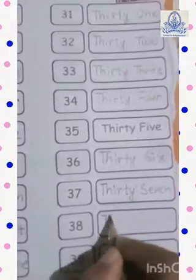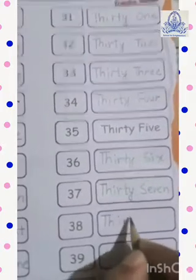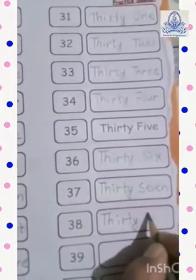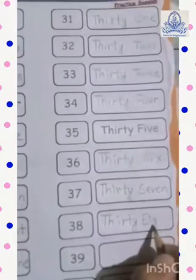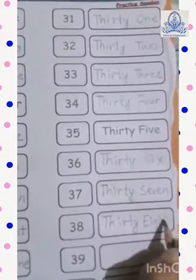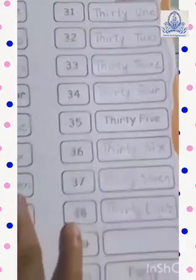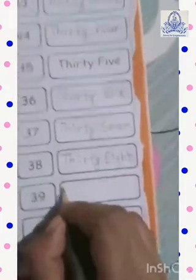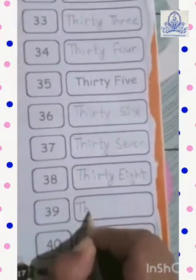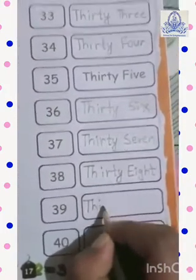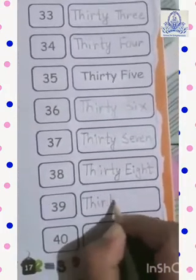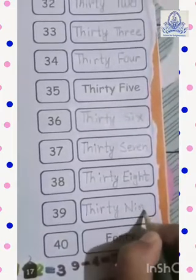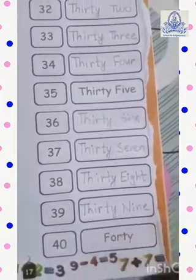Thirty-eight: T-H-I-R-T-Y E-I-G-H-T — 38. Thirty-nine: T-H-I-R-T-Y N-I-N-E — 39.